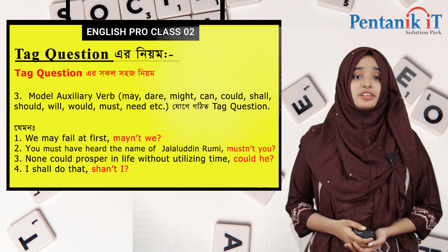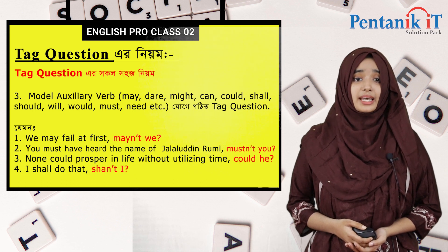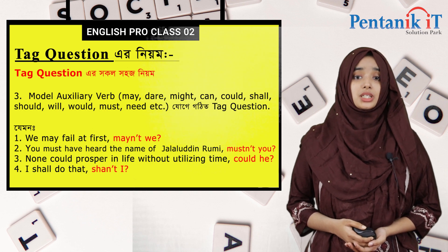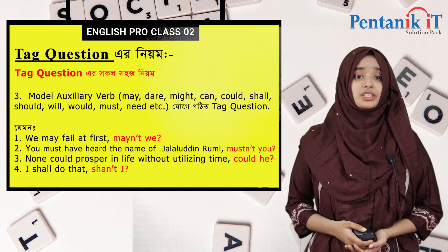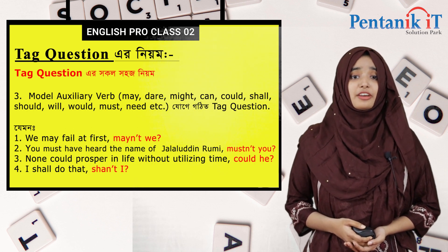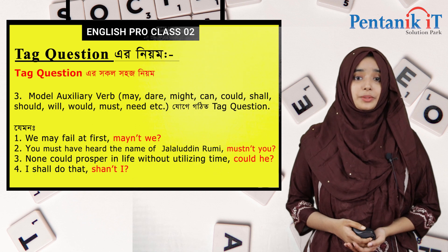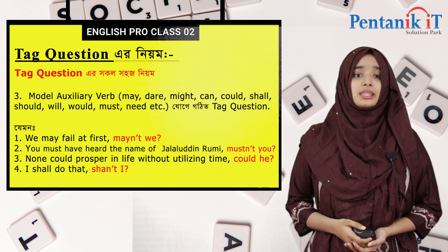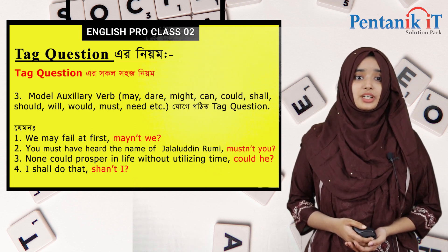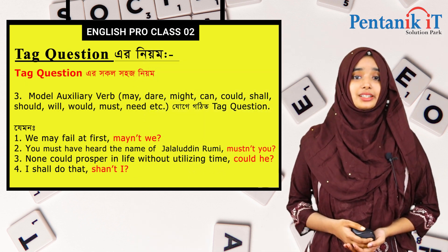Third হচ্ছে modal auxiliary verb। এগুলো হলো may, dare, might, can, could, shall, should, will, would, must, need, etc। যোগে গঠিত tag question-এর উদাহরণ: 'We may fail at first, may not we?' 'We must have heard the name of Jalaluddin Rumi, must not you?' 'None could prosper in life without utilizing time, could he?' 'I shall do that, shan't I?'